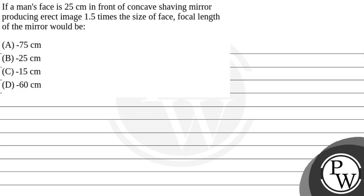Hello, let's read the question. If a man faces 25 cm in front of a concave shaving mirror producing an erect image 1.5 times the size of the face, what will be the focal length of the mirror? Options are: minus 75 cm, minus 25, minus 15, or minus 60 cm. Which one of the following options is correct?